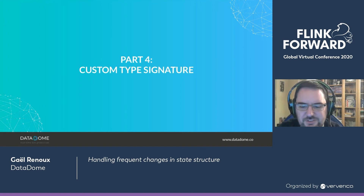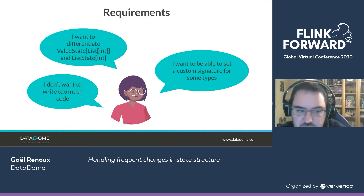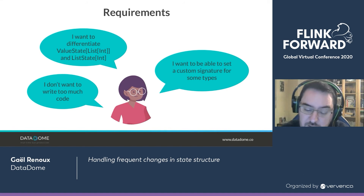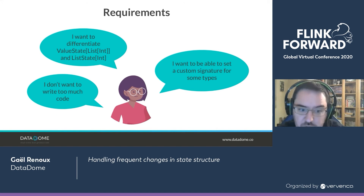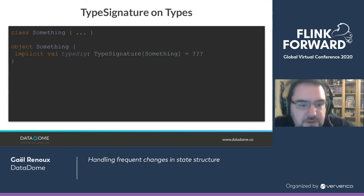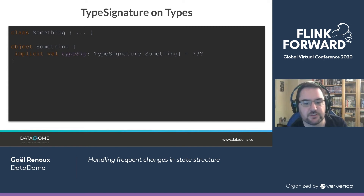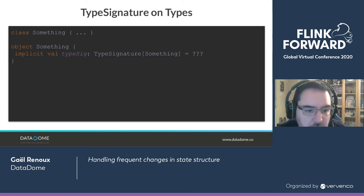So let's try something else: a custom type signature. What are our requirements? I want to differentiate value state and list state. I want to be able to set custom signatures because some of our types are not POJOs or case classes — we want to write ourselves the type signature for those. And ideally we don't want to write too much code. So can we satisfy all of this? Here's the basic idea: on the class Something, we're going to define a type signature of Something.